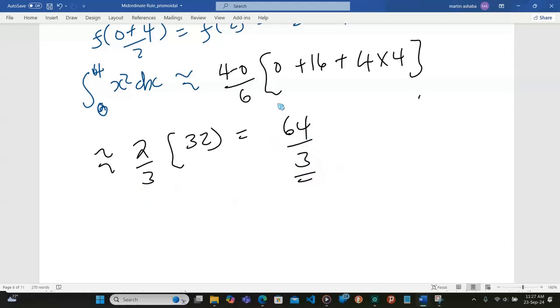So that integral from 0 to 4 of x squared with respect to x, according to the prismoidal method, is 64 out of 3.